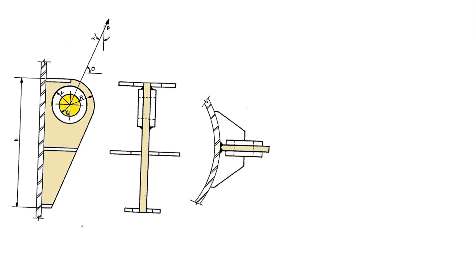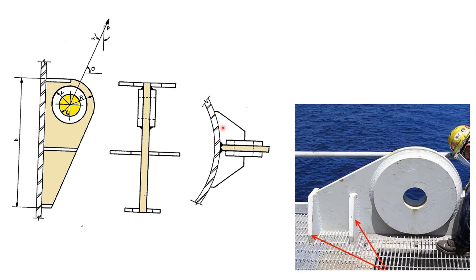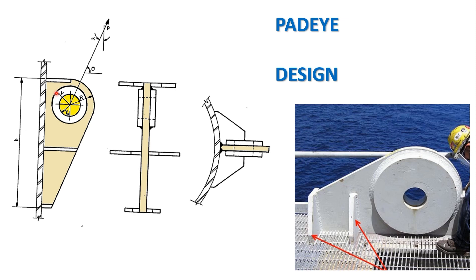Let us talk about the padai design. Here you can see the sling forces and sling angle — the vertical line to alpha is the sling line. This is the main plate, this is the padai plate, and stiffener plates are there. This is the stiffener height, meaning stiffener-to-stiffener height, the total padai height. Three stiffeners are there. This is the radius of the main plate, this is the radius of the cheek plate, and the pinhole diameter.